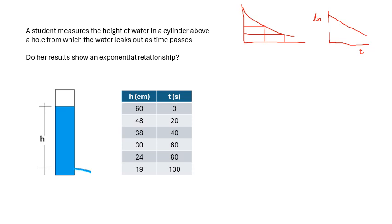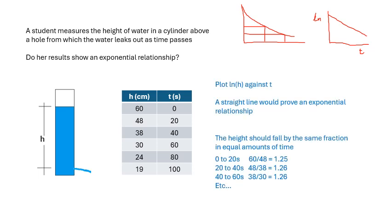The way I would do it in an exam is - now, so plot log h against t. Right, the height should fall by the same fraction in equal amounts of time. That time doesn't have to be the half-life, it can be any amount of time. In this case, just do it every 20 seconds. So the height should fall by the same fraction in equal amounts of time. So from 0 to 20 it goes down by 1.25, from 20 to 40, 1.26, from 40 to 60, 1.26, etc. So it's going down by the same fraction in equal amounts of time, or in any amount of time it goes down by the same fraction.